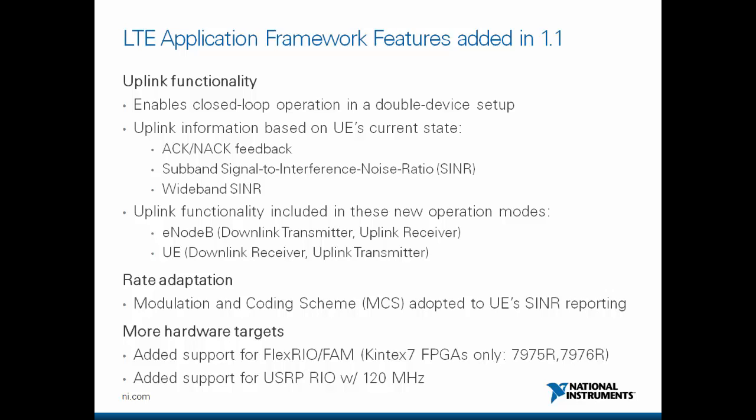This uplink functionality is included in two new operation modes: E-NodeB on one side — downlink transmitter and uplink receiver — and UE on the other side — downlink receiver and uplink transmitter. Also included is rate adaptation, so the modulation and coding scheme is adapted according to the reporting of the UE.